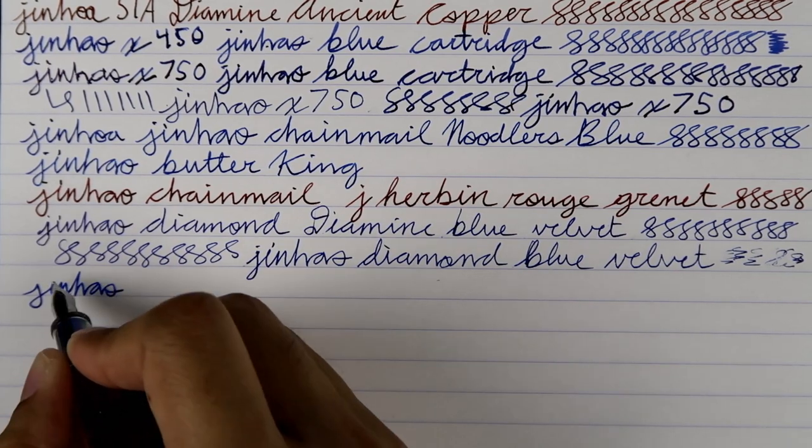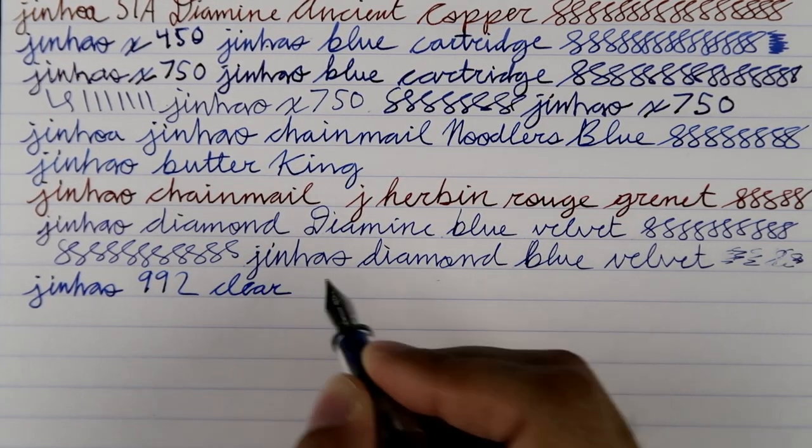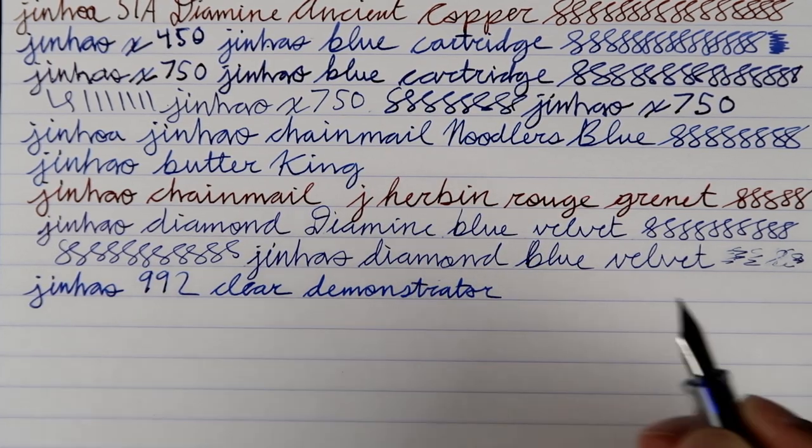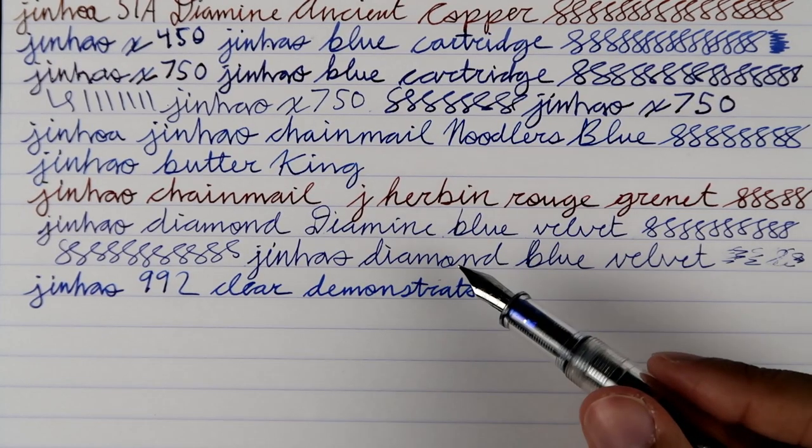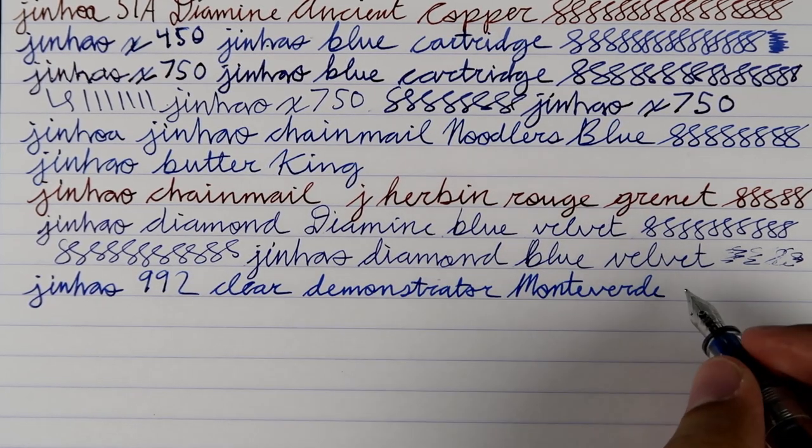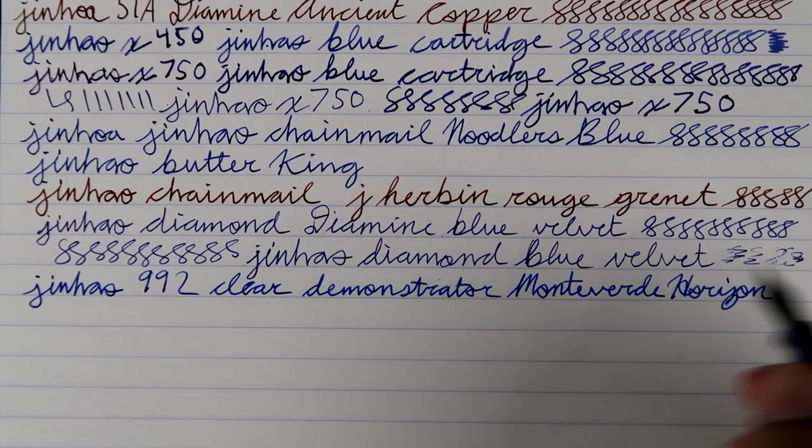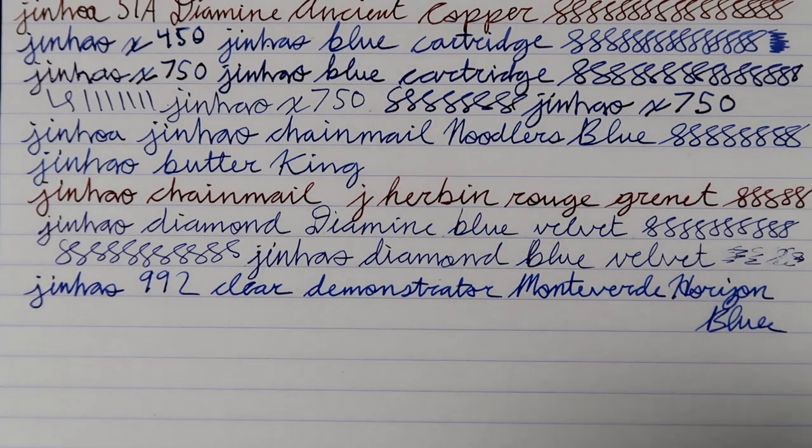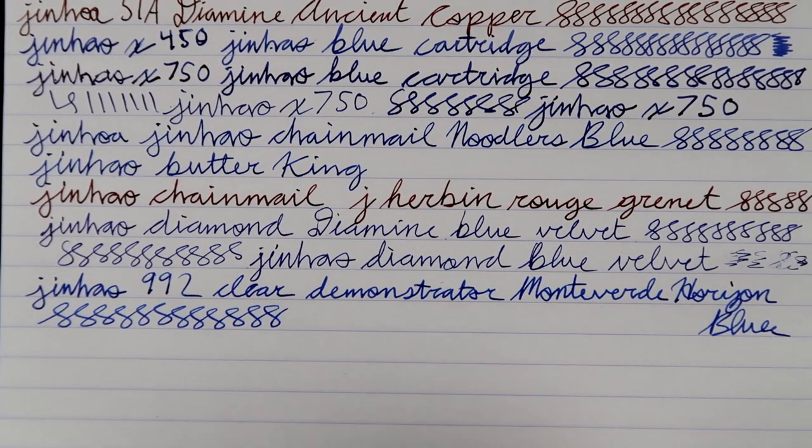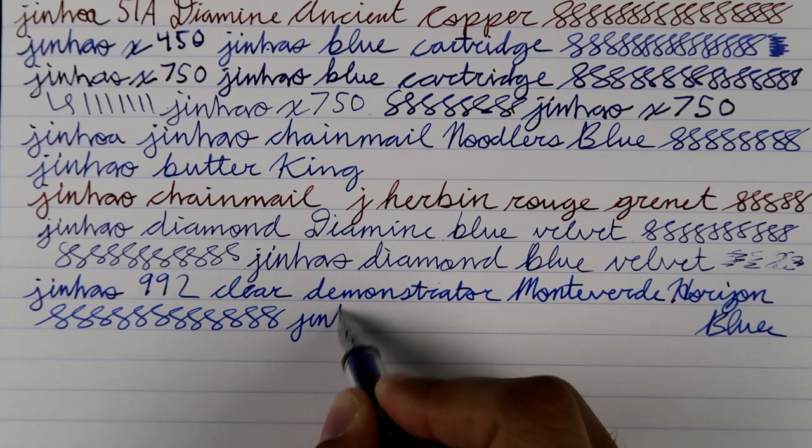Jinhao 992. And this has, this is a clear demonstrator. What ink is in here? This is a Monteverde. Oh, this is the best ink. Yeah, this is my favorite ink right now. Horizon, Monteverde Horizon Blue. Beautiful ink, look at that blue. Something else blue coming on the way this Friday. Just wait, you guys are going to get a big surprise on Friday, and it's going to be something blue. Horizon blue.